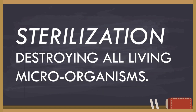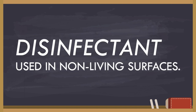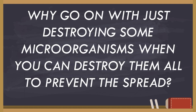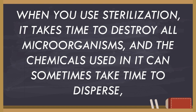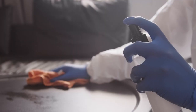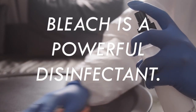To shorten it: sterilization means destroying all living microorganisms; sanitization means destroying some microorganisms; disinfectant is used on non-living surfaces; and antiseptic can be used on the skin. You may wonder why use sanitization when you can destroy all microorganisms. The answer is time and power — sterilization takes time, and the chemicals used are powerful enough to linger on items. That's why bleach on your bathroom or laundry takes time to disperse — it's a powerful disinfectant.